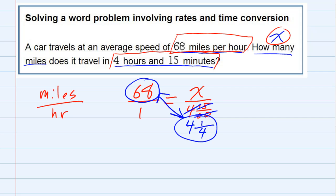In this direction, I would have 68 times four and a quarter equals, when I multiply in the other direction, I've got one times X, which is just X.